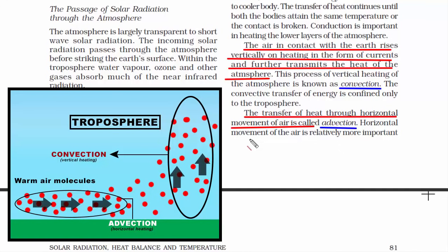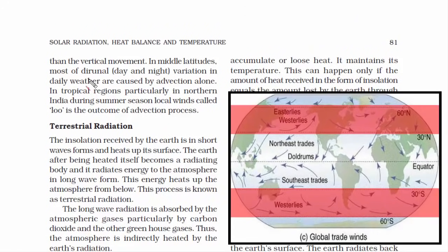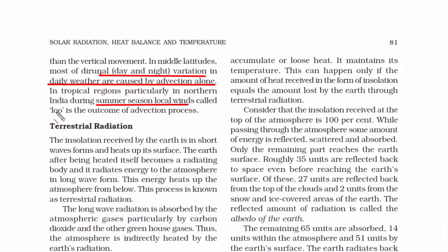The sideways movement of warm air affects the temperature of a region. In middle latitudes, most of the weather and temperature variation during day and night is caused by the horizontal movement of winds — that is, advection. You must have heard, especially in northern India, about a local wind that blows during summer called Loo. It's a warm, dry wind — basically a result of the advection process, the horizontal movement of air.